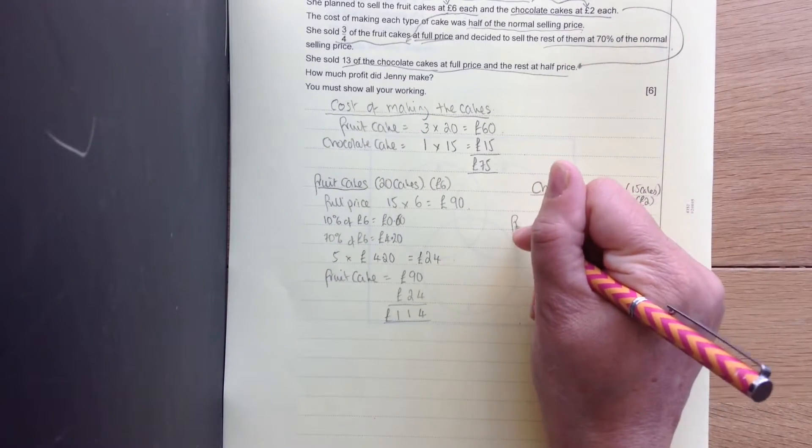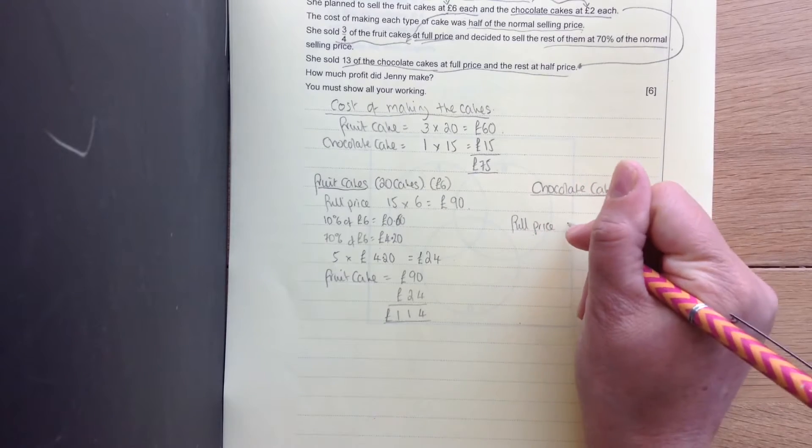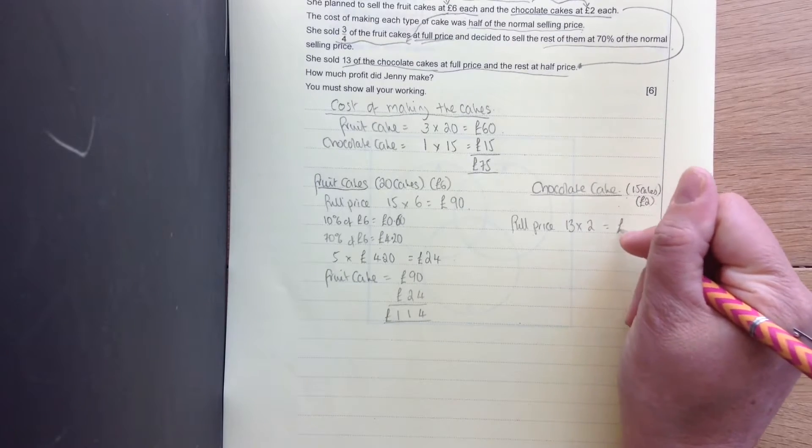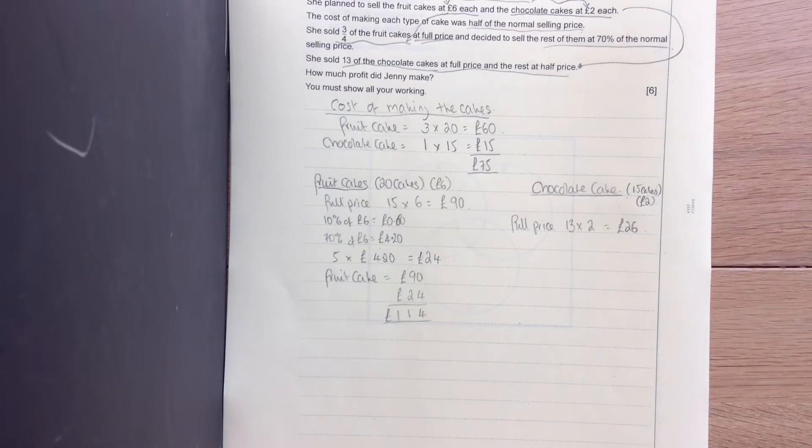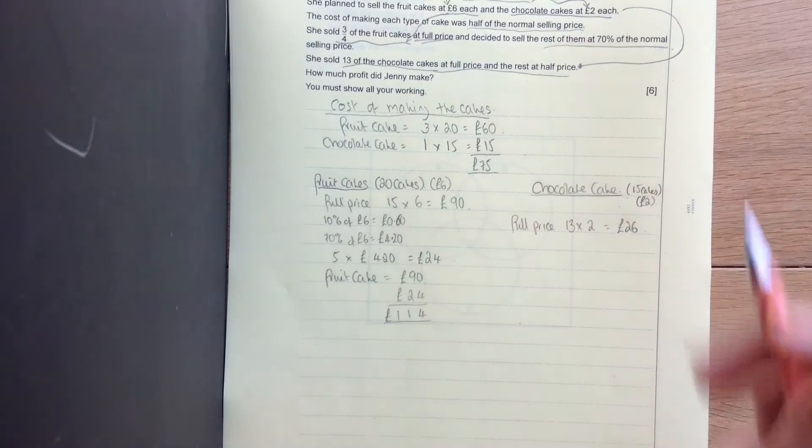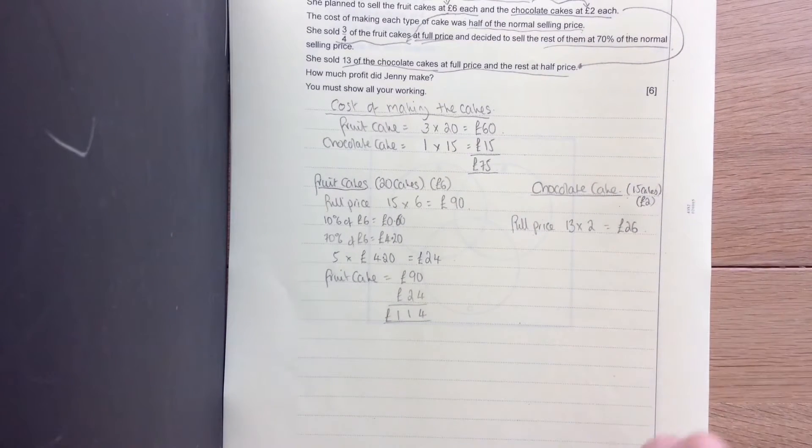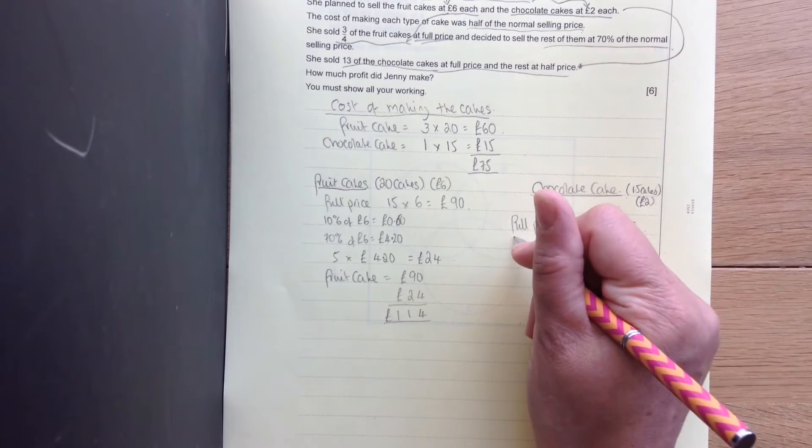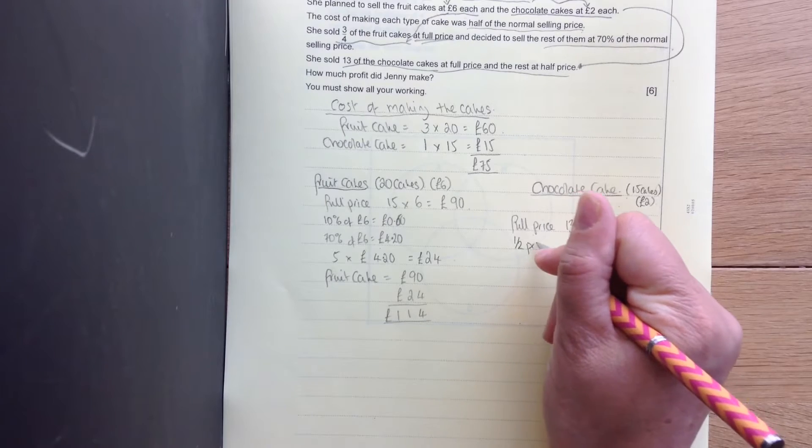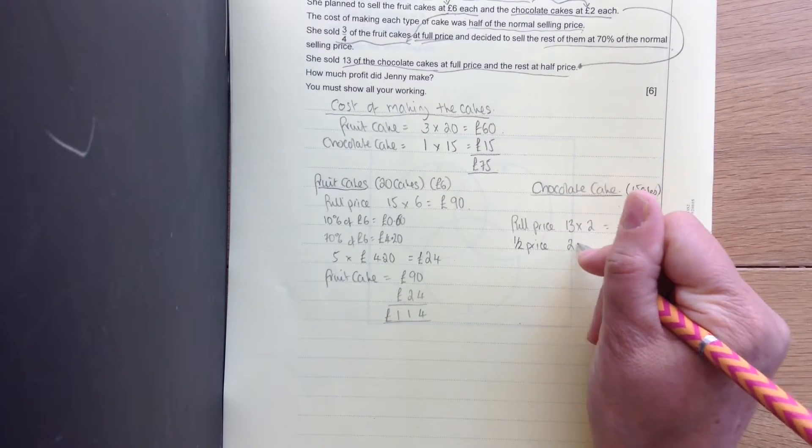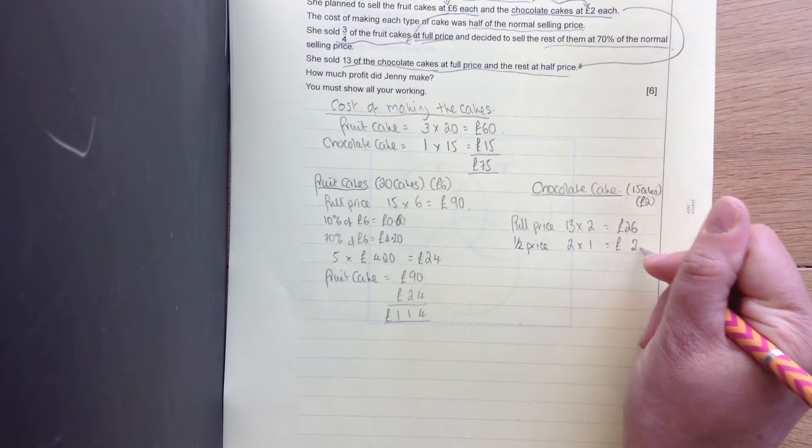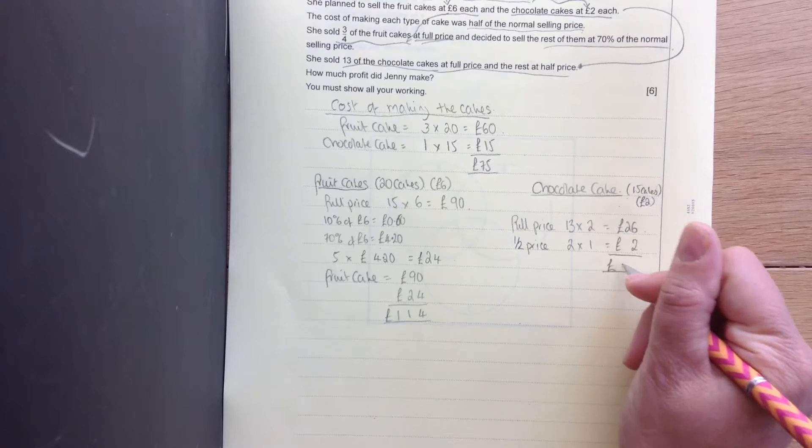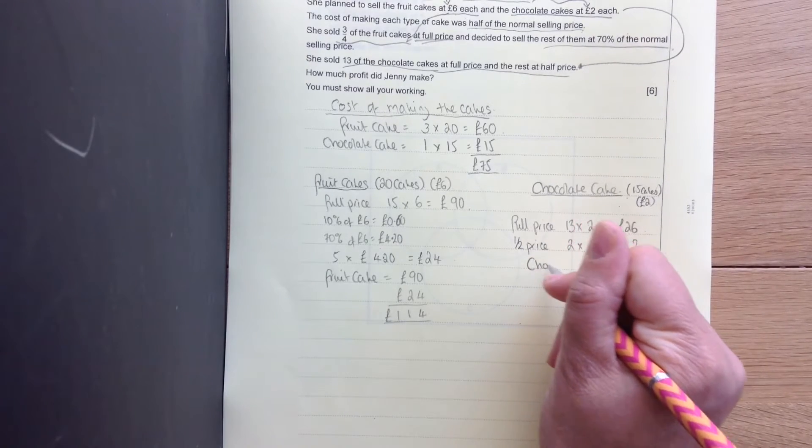So at full price, I've got 13 times 2, £26. And the rest of them were at half price. So that's a further two of them at half price. Well, half of £2 is £1. So half price is going to be 2 times £1. That's £2. So altogether, the chocolate cakes bring in £28. So that's our chocolate cake.